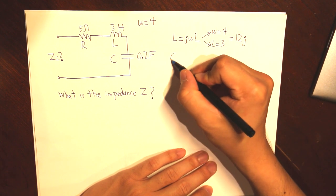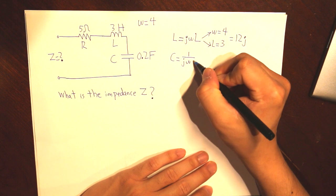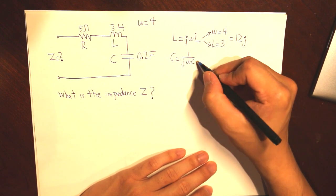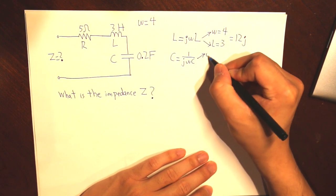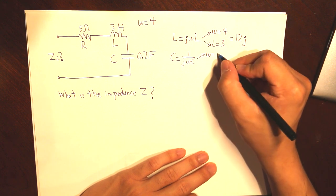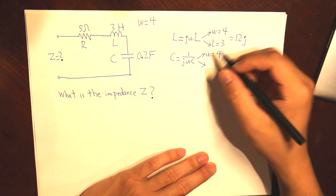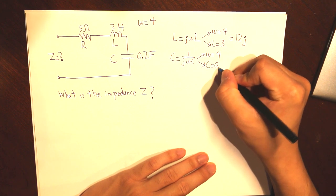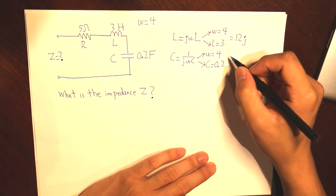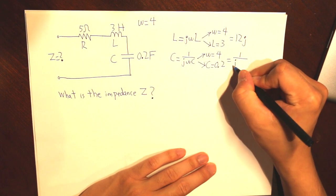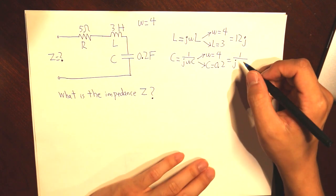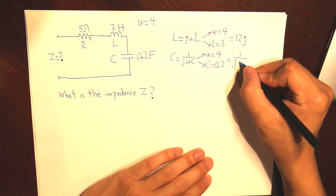For C, our capacitance, that is 1 over JWC. And that value, since we know what the angular frequency is, is 4. And then our C capacitance is 0.2.